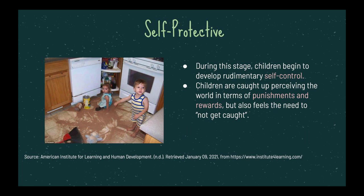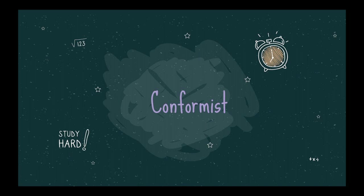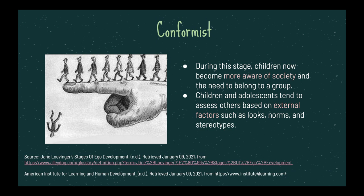This stage is called the conformist stage. During this stage, children become more aware of society and feel the need to belong to a group. Children and adolescents tend to look at others and make judgments based on external factors such as how they look and how they act, based off of the norms and stereotypes prevalent at their age. Because of this, the ego strengthens itself through comparisons to others and building a superiority complex based on judgments of others. For example, if someone breaks the norm, a person in this stage may boost themselves above that other person, seeing themselves as more superior because they follow the norm, which builds a stronger ego.